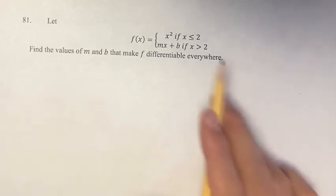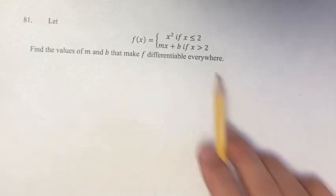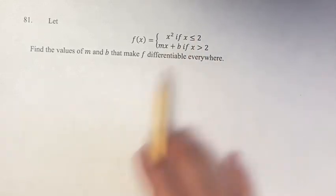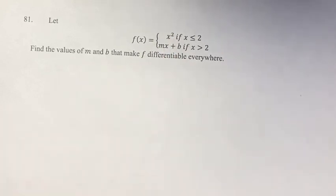The problem with this is that the function is guaranteed to be differentiable when x is less than 2, and when x is greater than 2. But where these two functions meet, we might have a problem if we don't have the right values of m and b.